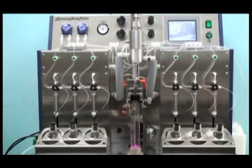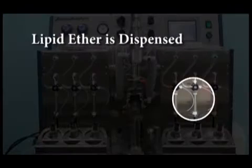The automatic processing steps of the automaker as it prepares large unilamellar vesicles are as follows. First, the automaker dispenses the lipid ether into a test tube.